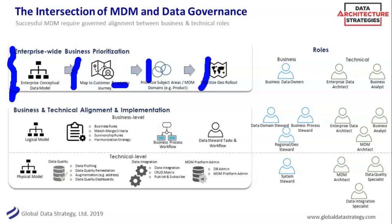These are all business-level things — you don't even need IT in the room, though it's helpful. What are my different subject areas and domains? How do I prioritize by geography — do I start in one country, just the U.S. and then Europe, or globally? I would say: design globally, implement locally. You should have a model — don't just start in Ireland and build a model for Ireland and then discover Switzerland has different attributes too late. Model it holistically, but you might want to roll out by region.